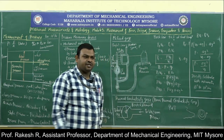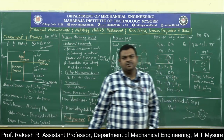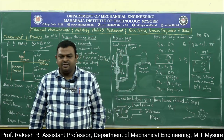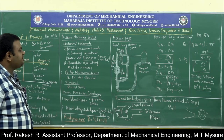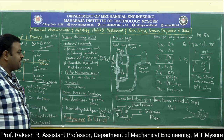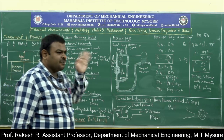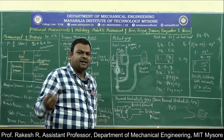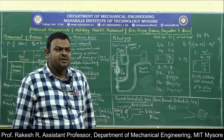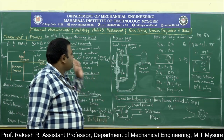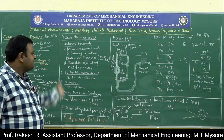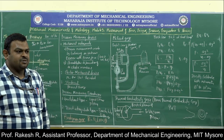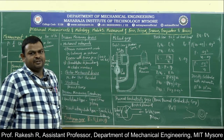In this module we have studied: measurement of force (direct and indirect methods), measurement of torque (absorption dynamometer — Prony brake and rope brake — and transmission dynamometer, along with hydraulic and electrical dynamometers), and measurement of pressure (key terminology, McLeod gauge, and Pirani thermal conductivity gauge). Answer questions depending on what is specifically asked. Thank you.